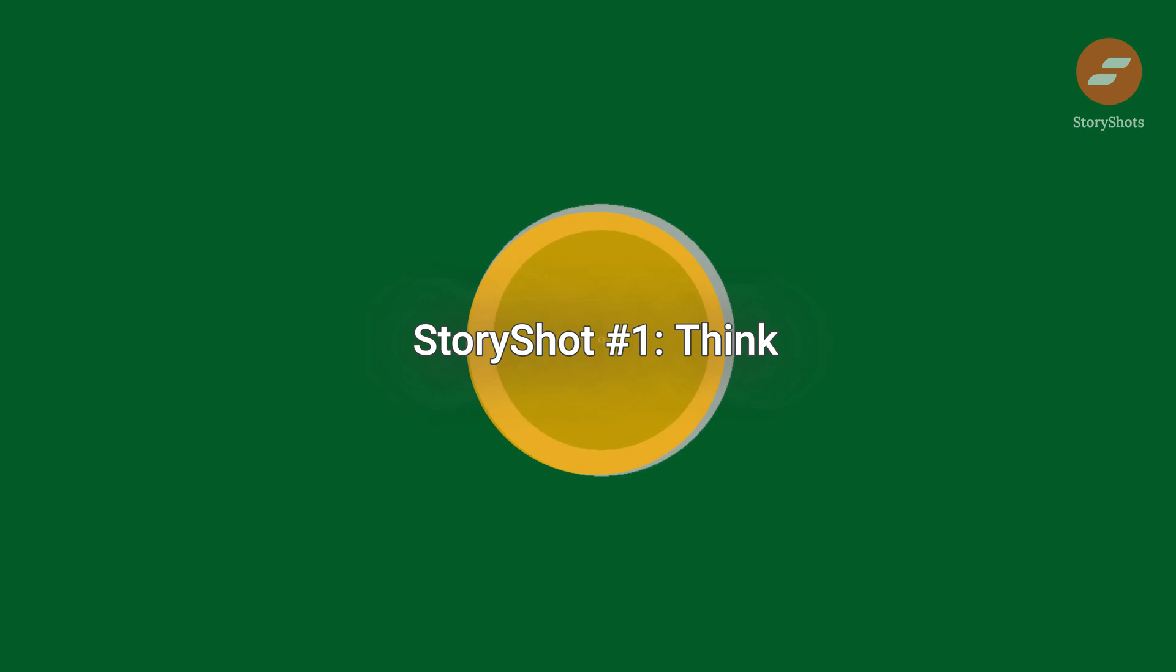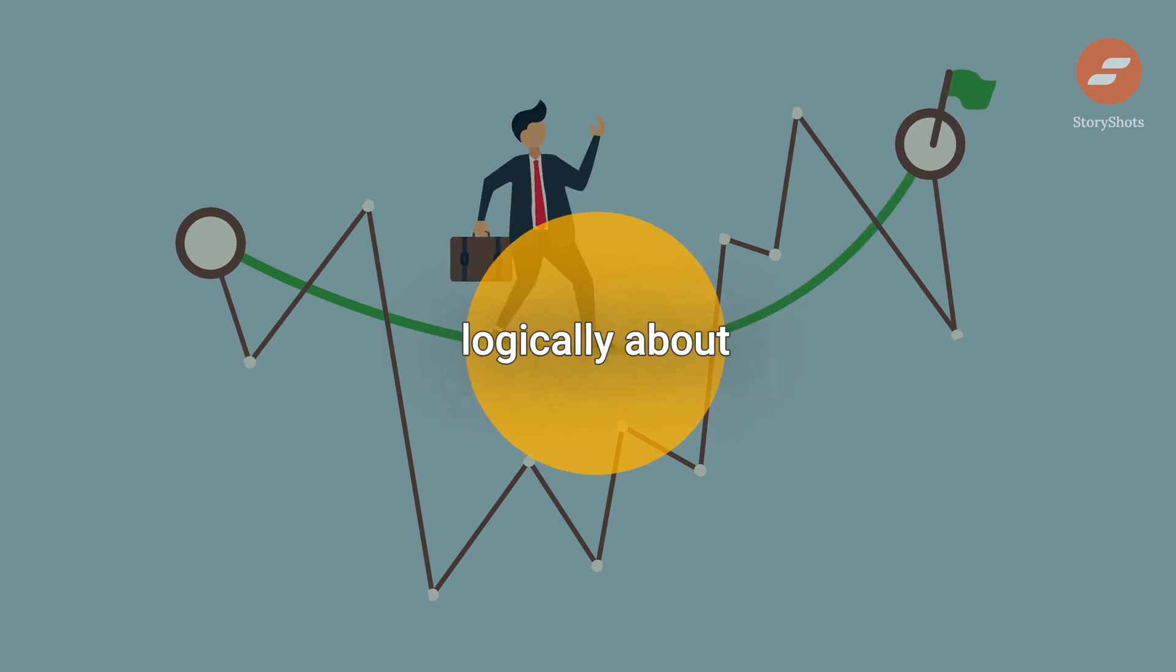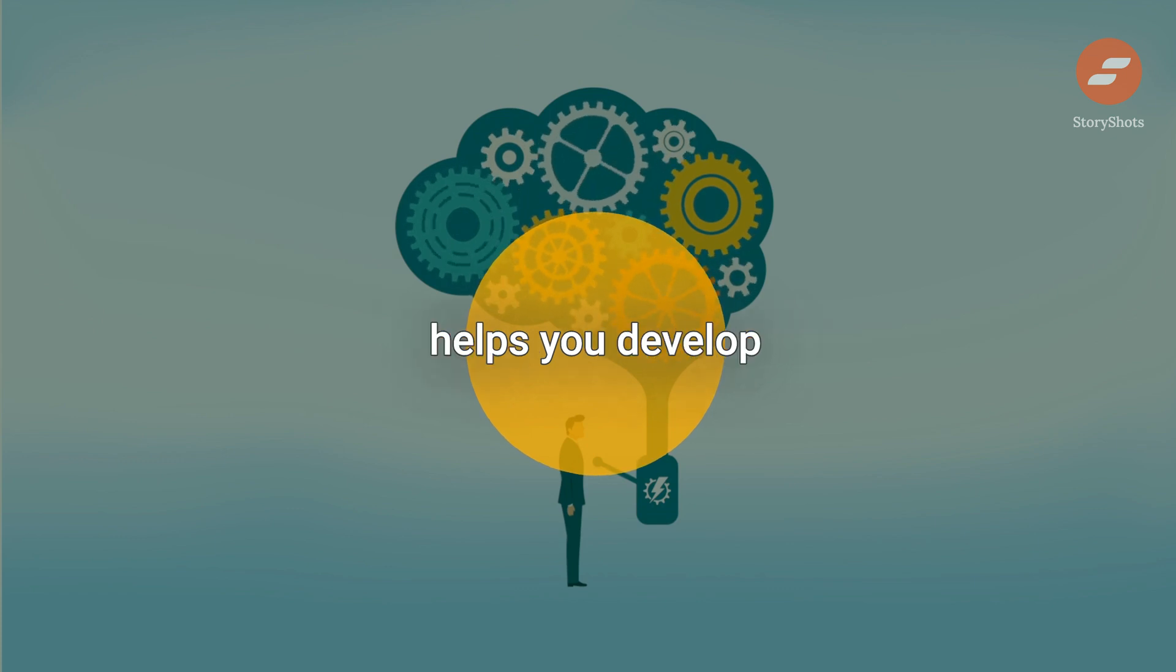StoryShot 1. Think in a Non-Linear Way. Non-linear thinking means thinking logically about what you can and cannot control. Consider the following statement: Where you should go depends on where you are. This non-linear way of thinking helps you develop critical thinking and be better equipped to avoid mistakes.